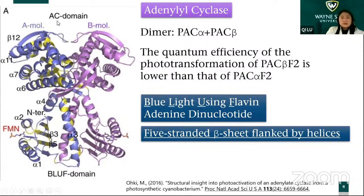The upper part is the cyclase domain and the lower part is the BLUF domain. BLUF stands for Blue Light Using Flavin adenine dinucleotide. This domain binds the chromophore FMN. In the BLUF domain, there is a five-stranded beta sheet flanked by helices.